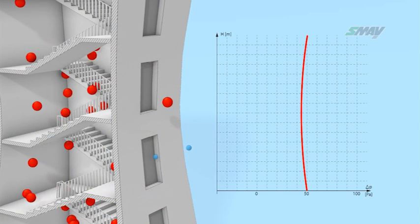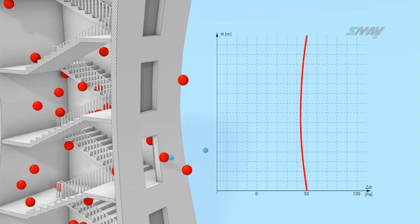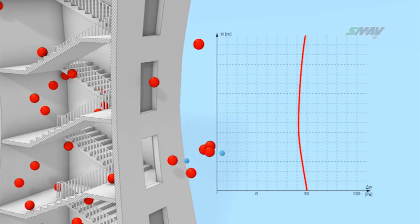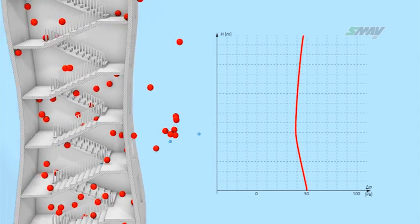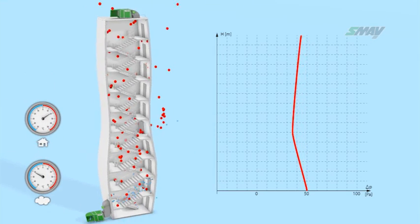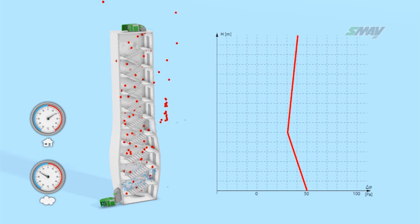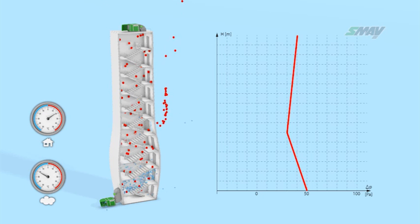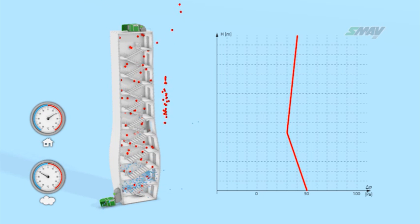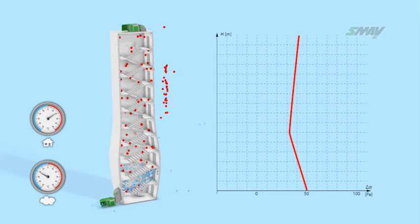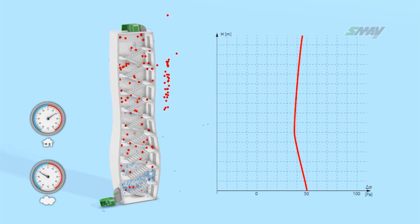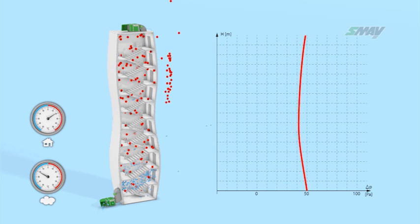If doors are opened and pressure drops, then the fan will increase the stream of air supplied to the stairwell. Once the doors are shut, the system returns to observing the pressure criterion and supplies an amount of air needed to counteract the stack effect and flow resistance.